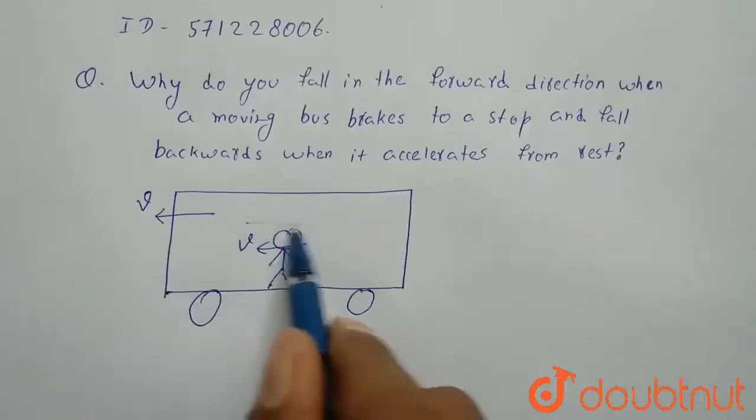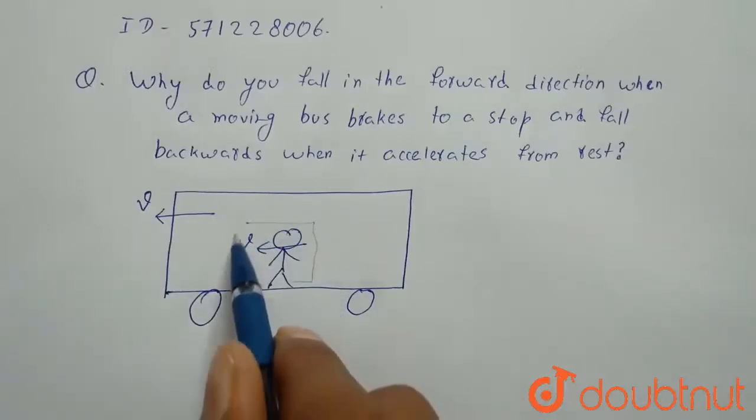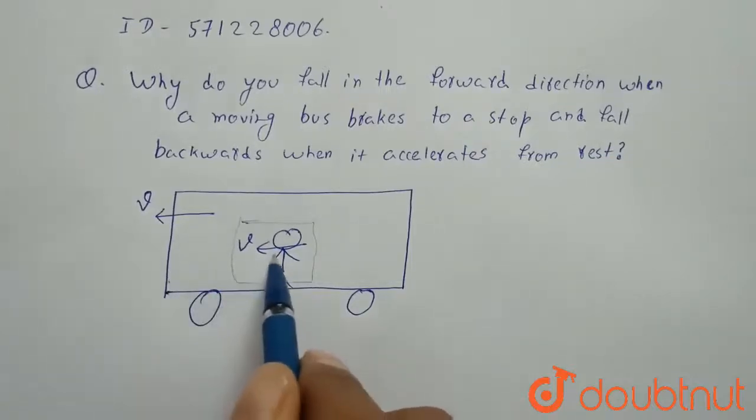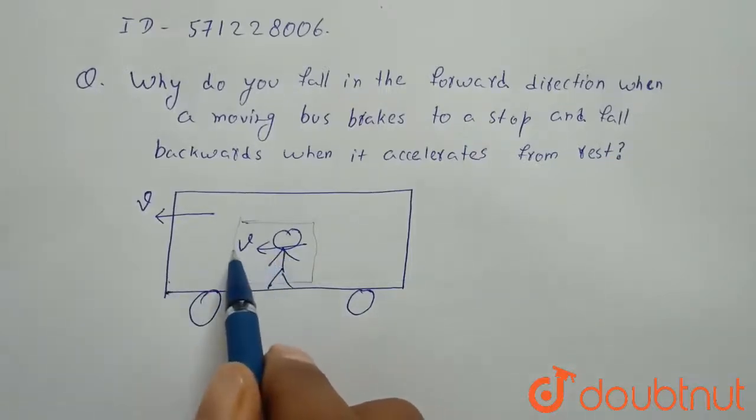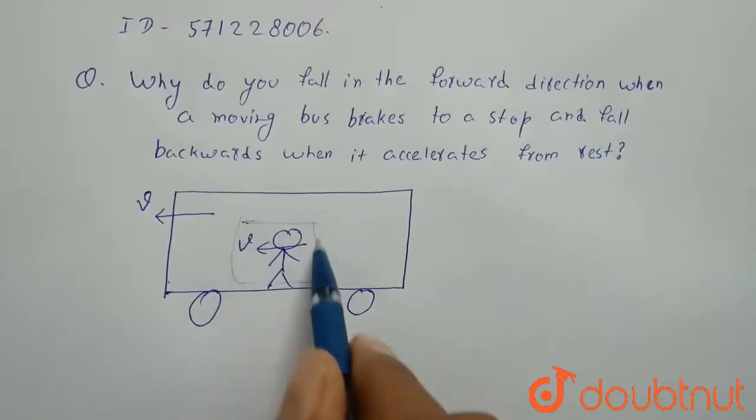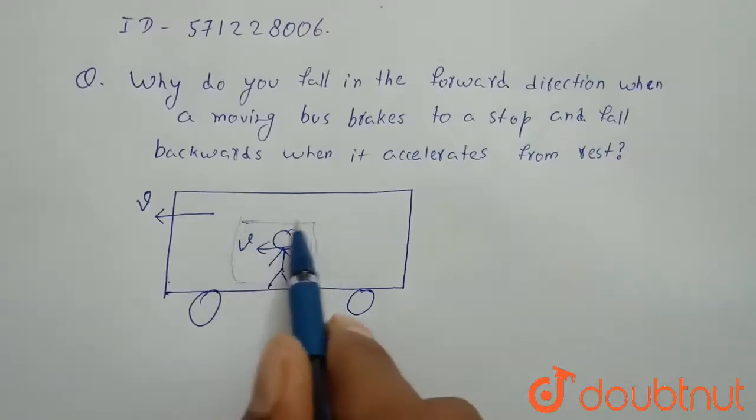But you have a velocity of v, so what will happen? The bus will stop but you will keep on moving in forward direction. This is due to inertia. Anything in rest remains in rest, anything in motion, which is you, you are in motion in the bus.